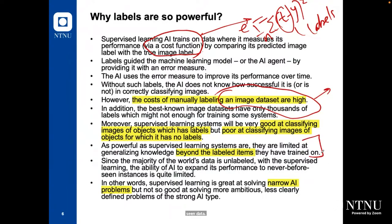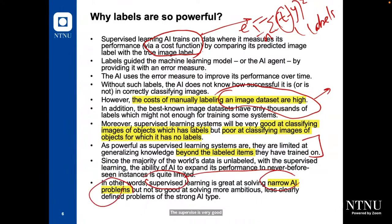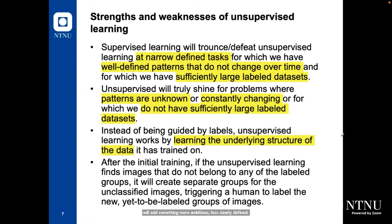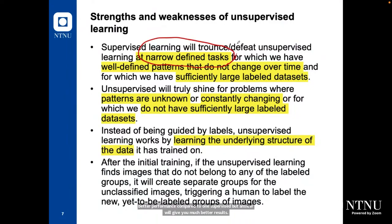Supervised learning is very good at solving narrow, well-defined AI problems. But it is not as good at solving more ambitious, less clearly defined problems of the strong AI type. Supervised learning will defeat unsupervised learning at narrowly defined tasks if the problem is very well defined, giving much better performance. But unsupervised will give better results when you need to discover unknown patterns, when working with constantly changing data, or when there is no sufficient large labeled dataset.